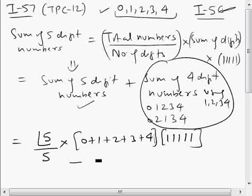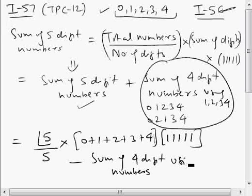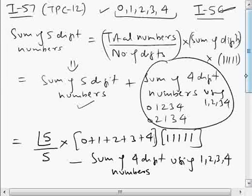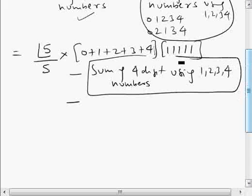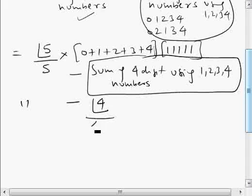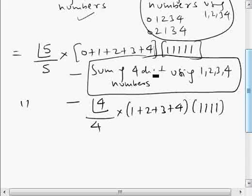Now we need to subtract the sum of 4-digit numbers that can be formed using 1, 2, 3, 4 — those numbers where 0 came as the first digit. We subtract that sum using the same approach: number of numbers that can be formed with these 4 digits is 4 factorial, divided by number of digits (4), multiplied by sum of digits, multiplied by sum of place values — 1111 four times, since we are making 4-digit numbers.